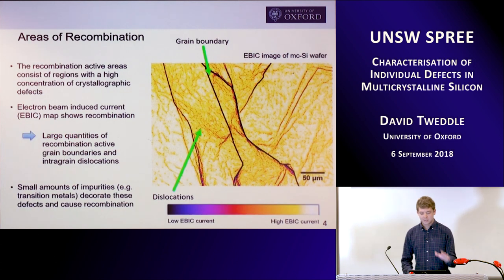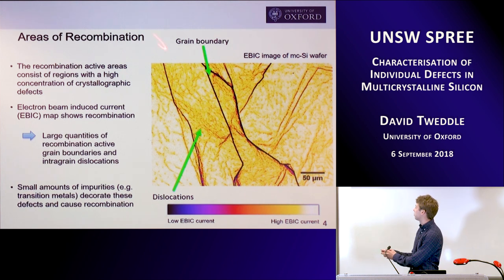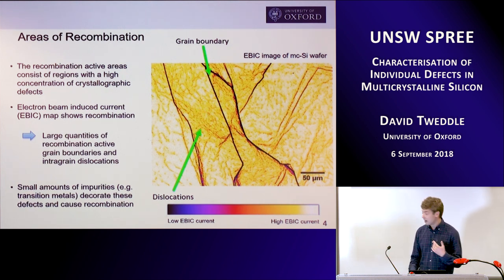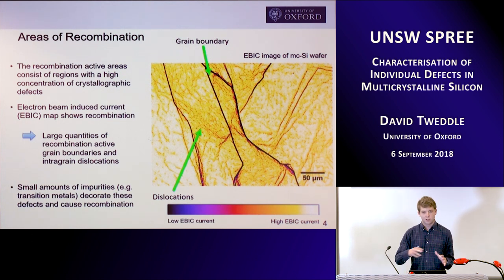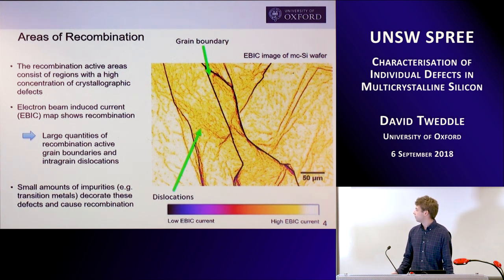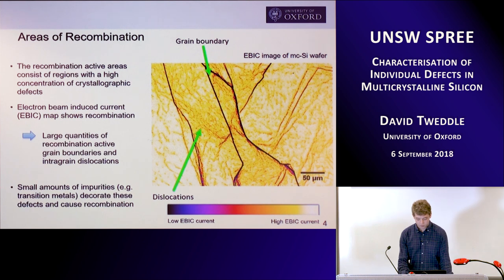So what do these areas of recombination actually look like? Here is an EBIC image of a multicrystalline wafer, and we've got recombination active grain boundaries and intra-granular dislocations. It is really these defects that you find in these recombination active regions. As I've said, it's the small amounts of impurities — maybe transition metals — that decorate these defects and cause your recombination.